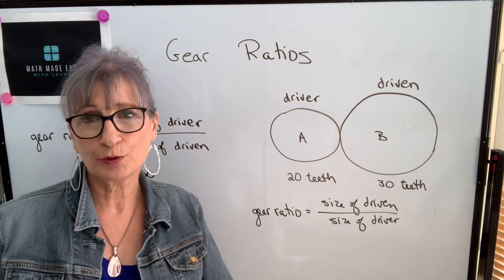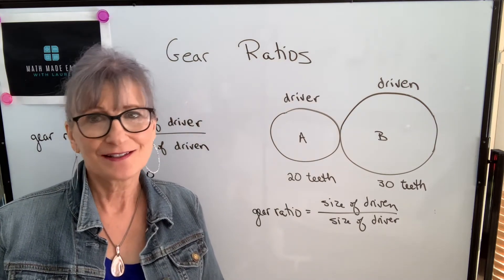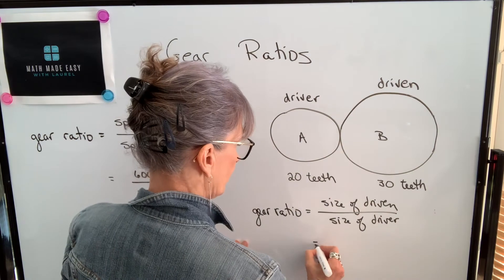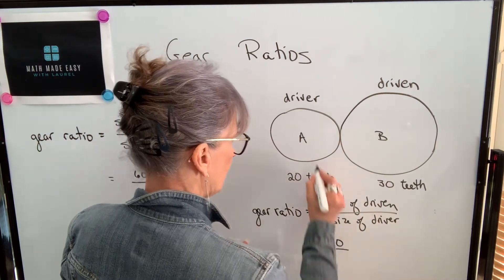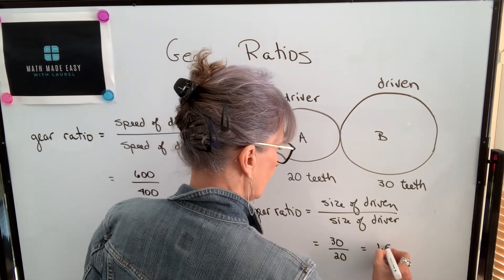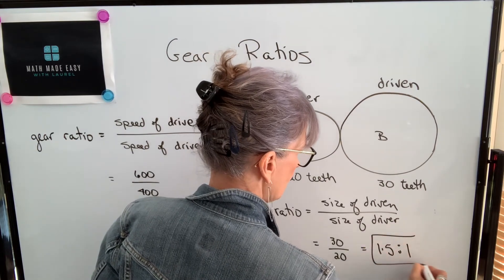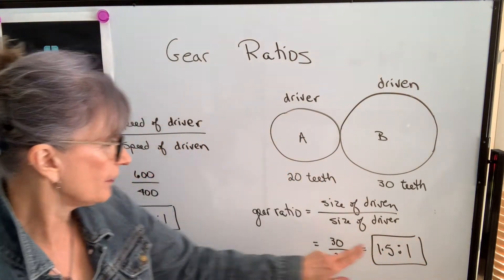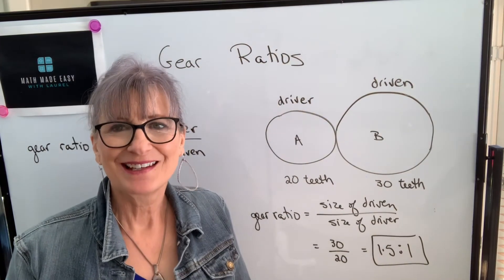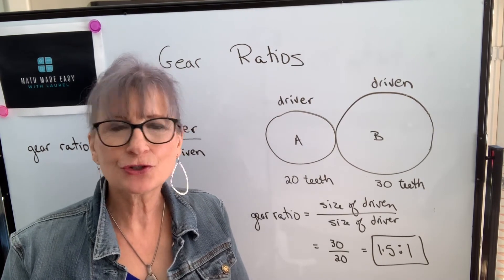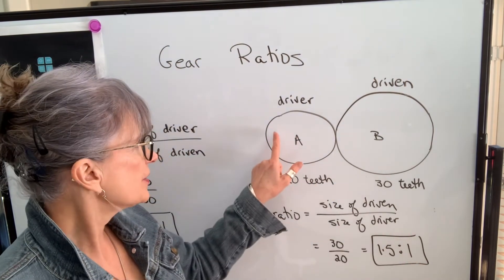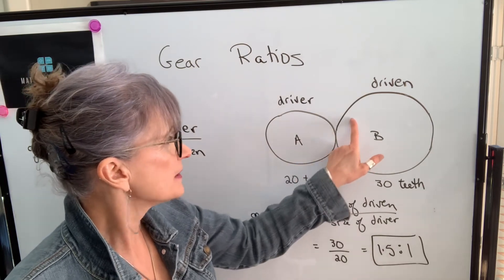You may also see the terminology output and input instead of driven and driver — the same thing. So in our example, we find this gear ratio by taking the size of the driven, which is 30 teeth, divided by the size of the driver, which is 20 teeth. When I divide 30 by 20, I get 1.5, and that ratio is to 1. So this gear ratio is 1.5 to 1 using either method. What that means is that the driver is turning 1.5 times for one revolution of the driven.